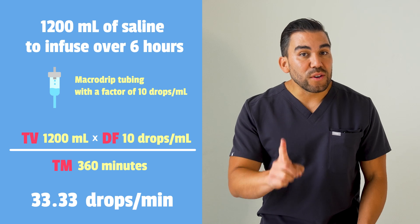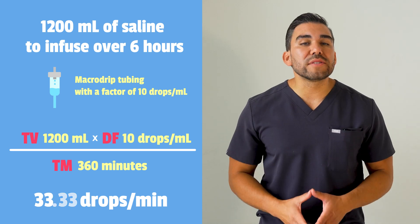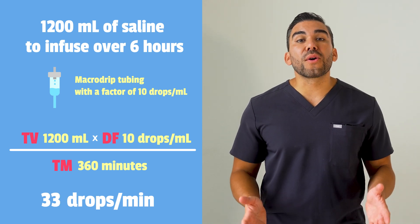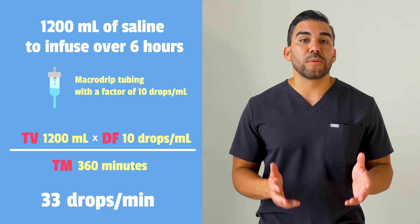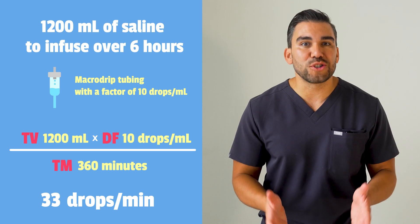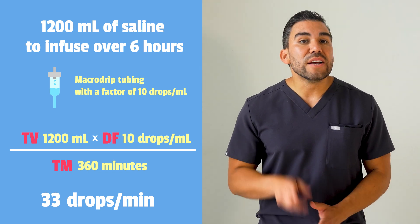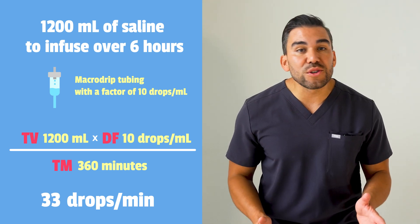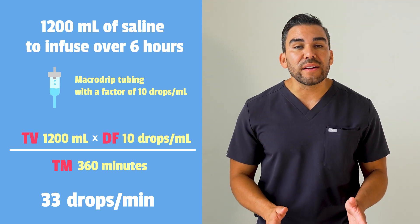Don't forget, we have to round down to 33 drops per minute, because you can't give half a drop. So that's your target flow rate and the correct answer.